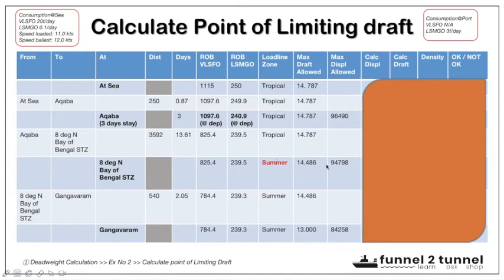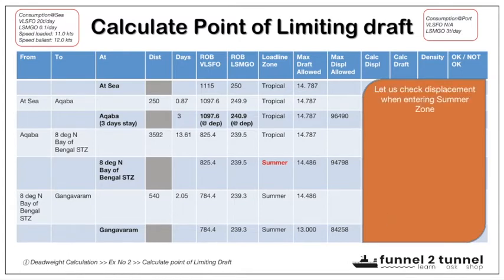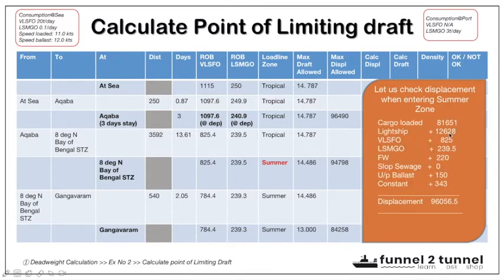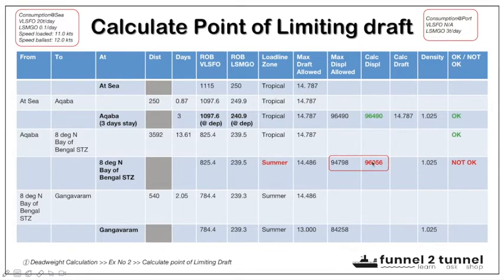The ship moves from Akaba to the 8° North summer load line zone. The maximum displacement allowed there is 94,798 tons. Bunker ROBs on arrival will have reduced to 825.4 and 239.5 tons due to fuel consumption. Calculating the displacement when the ship carrying 81,651 tons cargo arrives at the summer zone gives 96,056.5 tons — which is more than the allowed summer displacement of 94,798 tons. The condition becomes NOT OK — the summer load line is exceeded, so the cargo must be reduced.